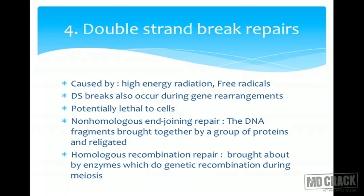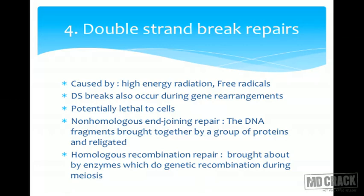To conclude: accumulation of uncorrected DNA damage over years is considered a cause of aging, and defects in the repair system predispose to cancer and immunodeficiency syndromes. DNA repair mechanisms have been implicated in all these conditions.